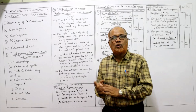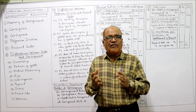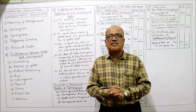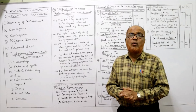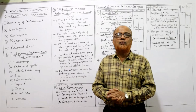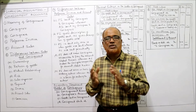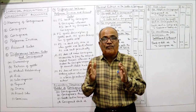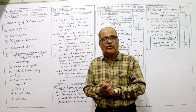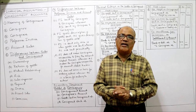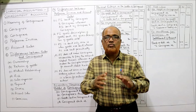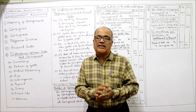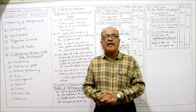In this video I'm going to explain the meaning of the term Consignment, the features of Consignment, differences between Sales and Consignment, differences between Proforma Invoice and Account Sales, and the accounting treatment in the books of the Consigner and Consignee — what accounts they prepare and what journal entries they pass. Watch till the end because if you are strong on theory, you can easily understand the problems.